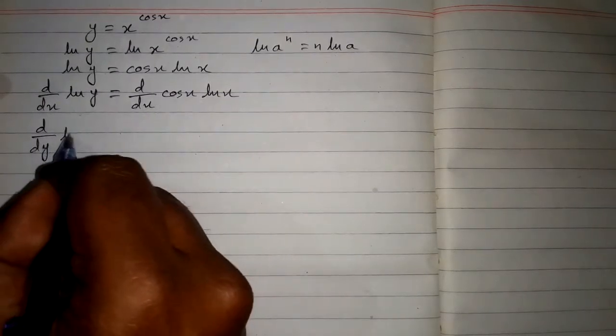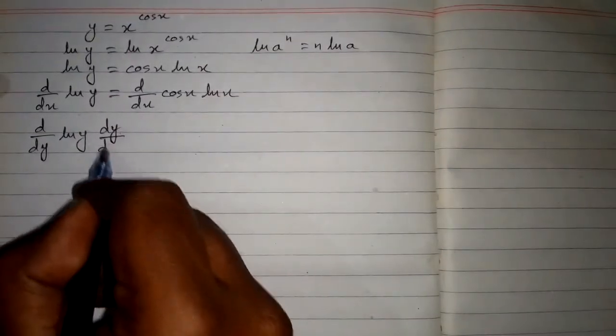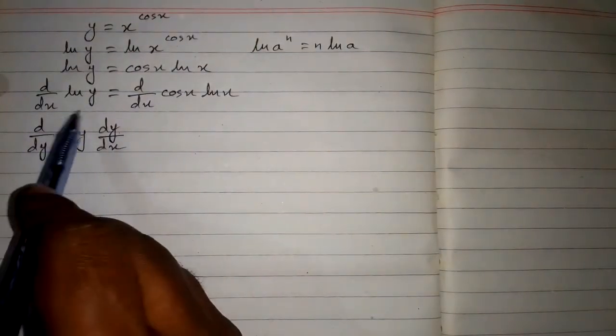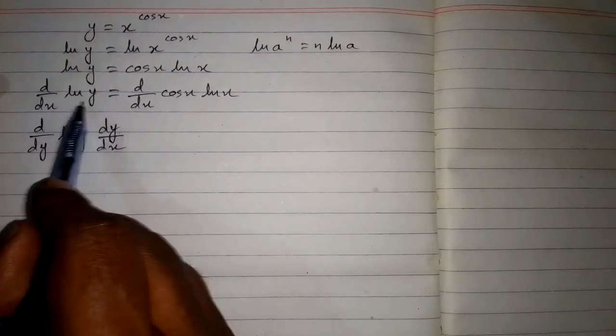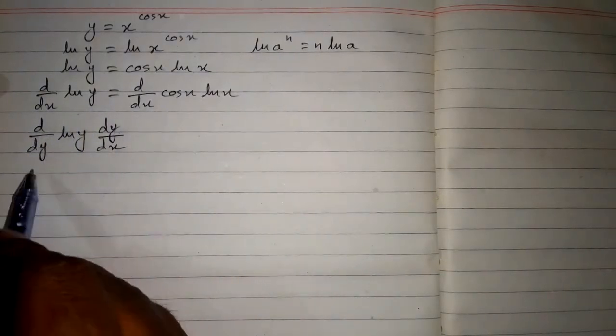So we have d by dy of ln y times dy by dx, because we cannot differentiate ln y with respect to x. So we have to apply the chain rule.